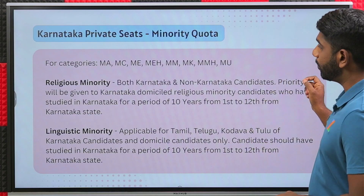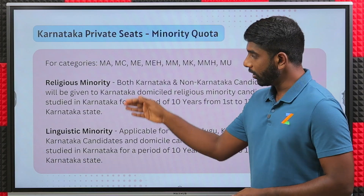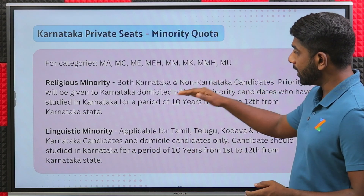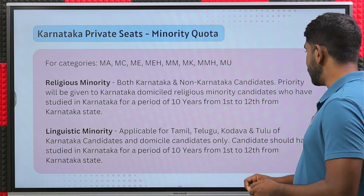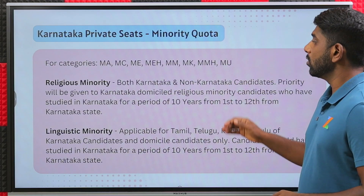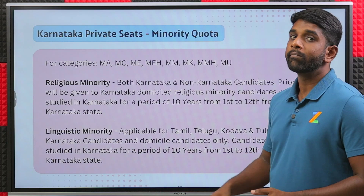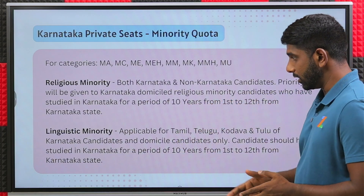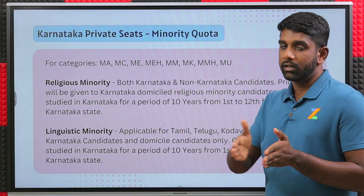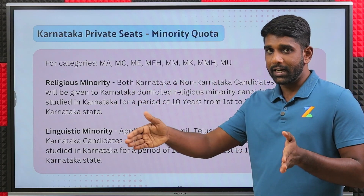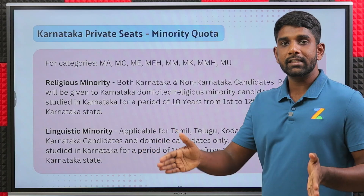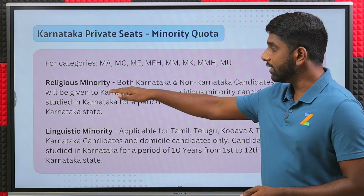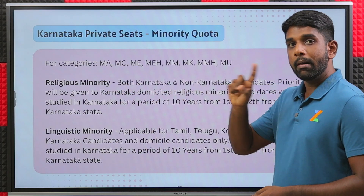However, there is a priority order. The first priority will be given to Karnataka domiciled religious minority candidates who have studied in Karnataka for a period of 10 years — from first standard to 12th standard. If they have studied for 10 years within that range, they'll be considered under religious minority priority one.